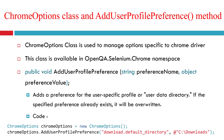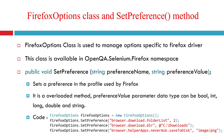The Chrome options class, which we discussed in a previous video, is used to manage options specific to the Chrome driver. This class is available in the OpenQA.Selenium.Chrome namespace. The AddUserProfilePreference method takes two parameters: the first is a string for the preference name, and the second is an object for the preference value. For example, we can set 'download.default_directory' to 'C:\Downloads'.